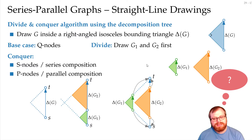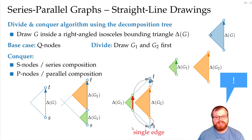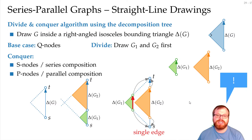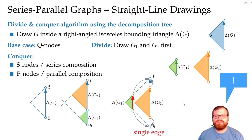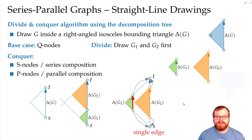Does this work or do you see any problem? Well, if we assume that this here is a single edge, after we move this vertex here and this vertex there, that whole edge would be drawn straight through the orange edge, so we have overlapping edges. That's not something we want at all — it's not planar, and overlaps are usually completely forbidden. So somehow we have to fix this.